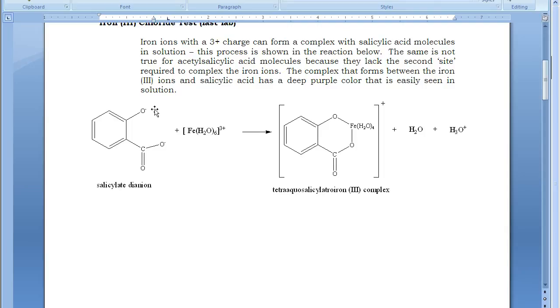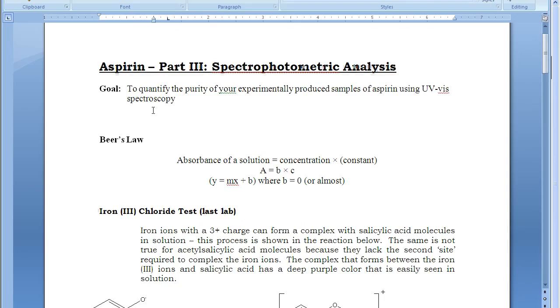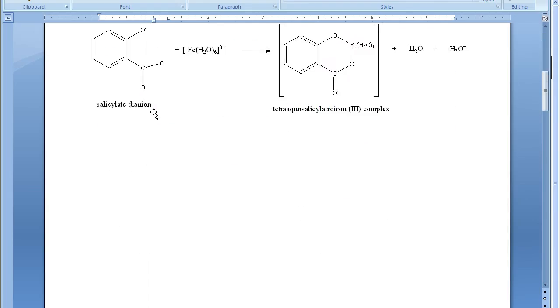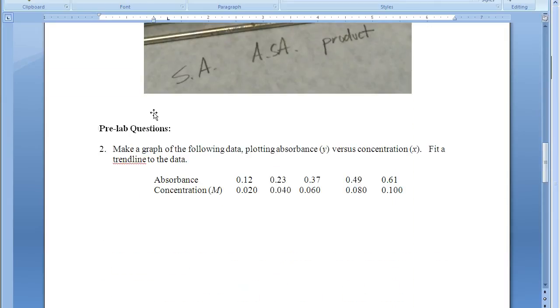To summarize, what you're going to do in this experiment is prepare a series of standards of salicylic acid with the iron 3 chloride. You will record the absorbance of each of those standards. You'll have to first determine at what wavelength, so it will allow you to scan from 400 to 700 nanometers. And you should see the peak absorbance somewhere in that range.